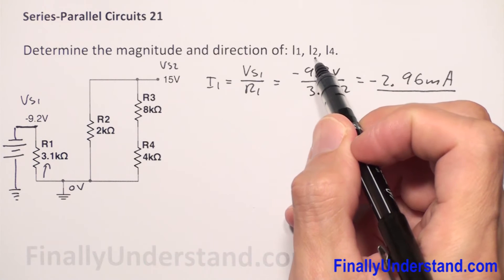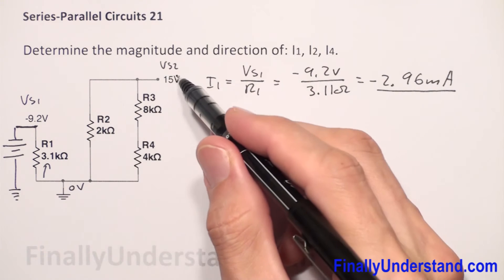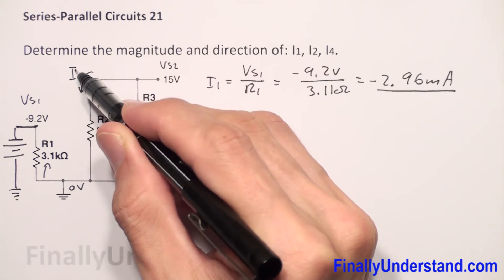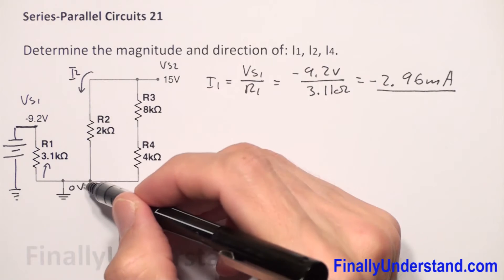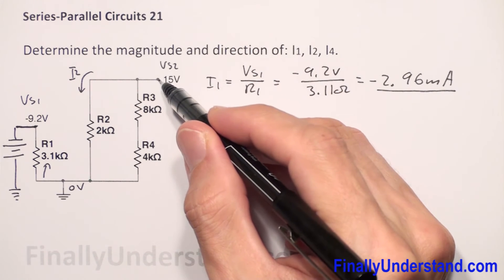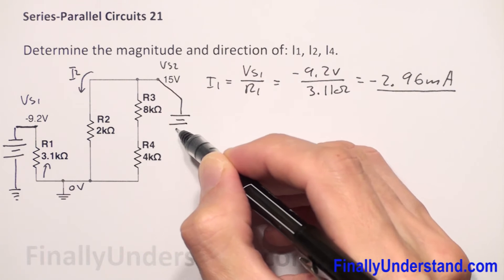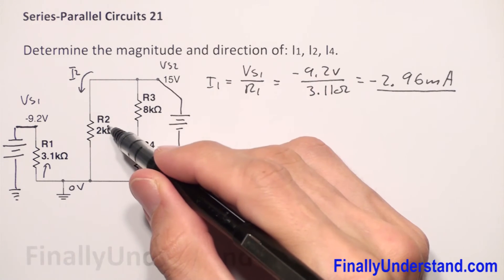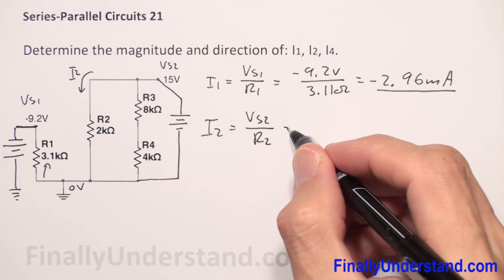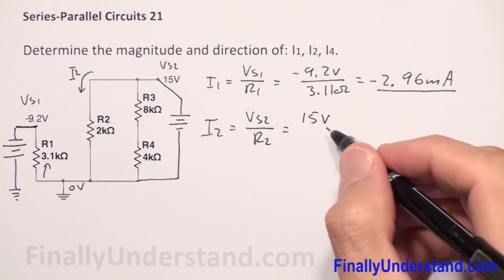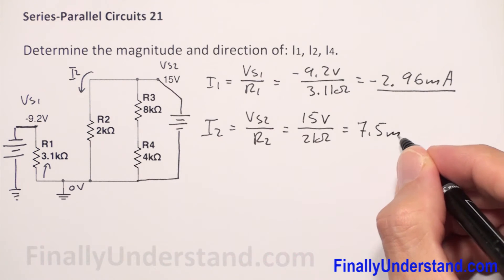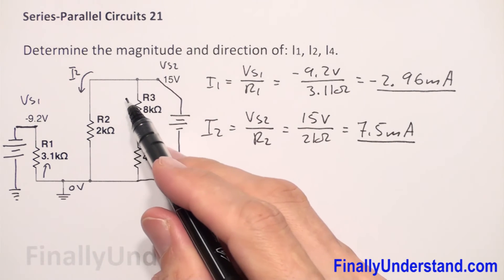Next, I'm supposed to find current I2, which is the current that goes through resistor R2. Since 15 volts is greater than 0, the current will go from the higher potential to the lower — from 15V to 0V. This voltage source is connected directly to my resistor R2. That's why I2 is equal to voltage source 2 over R2, where voltage source 2 is 15 volts over R2, which is 2 kilo ohms. So this is equal to 7.5 milliamps.